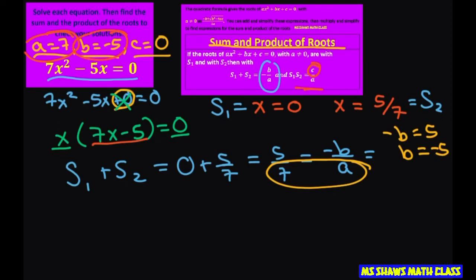So now let's check the product. For the product, we're going to do solution 1 times solution 2, which gives us 0 times 5 divided by 7, which is 0 divided by 7.